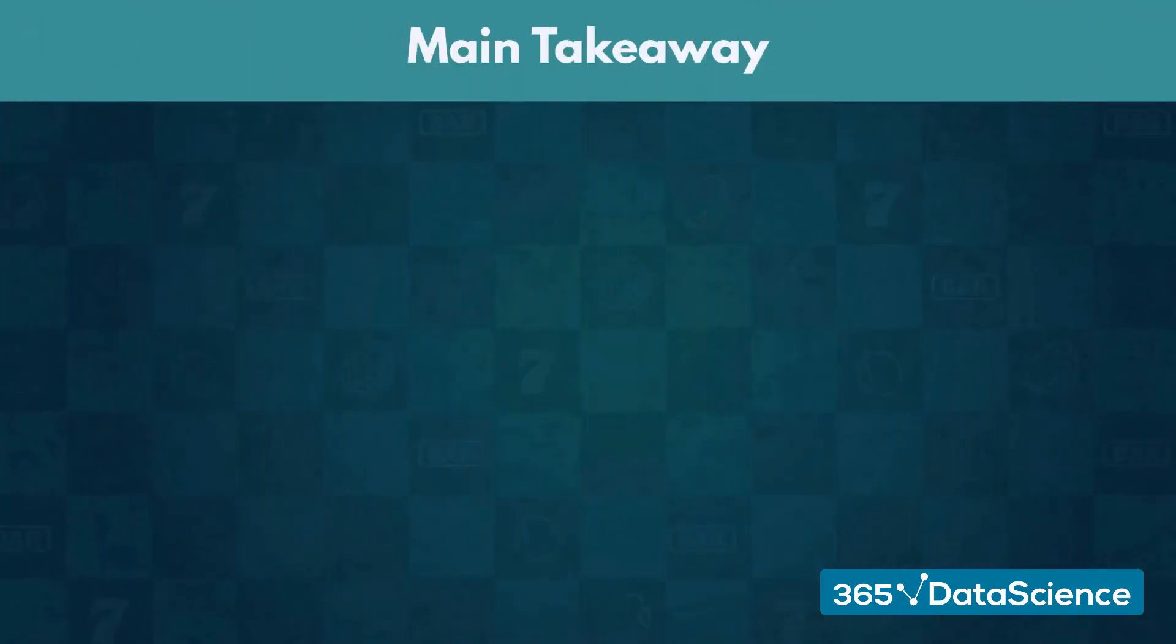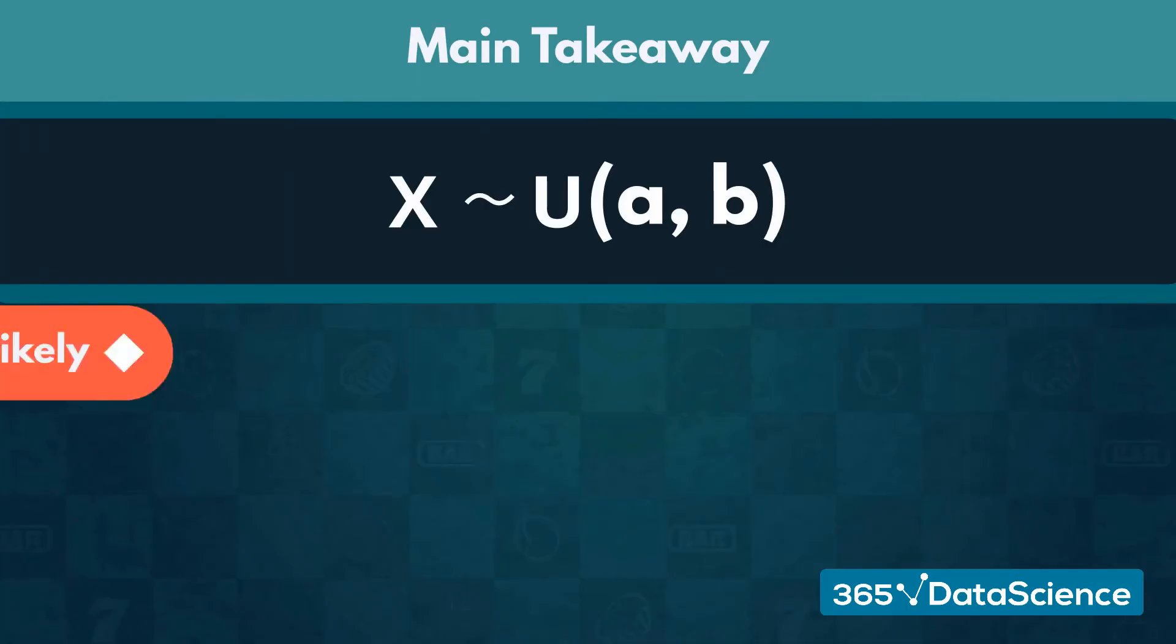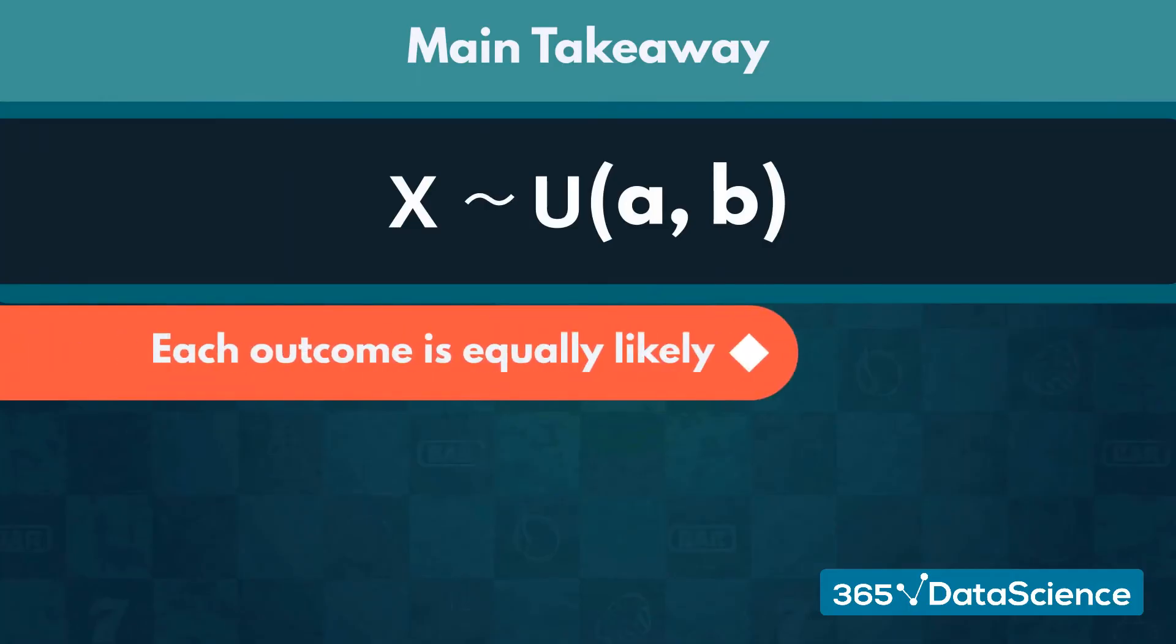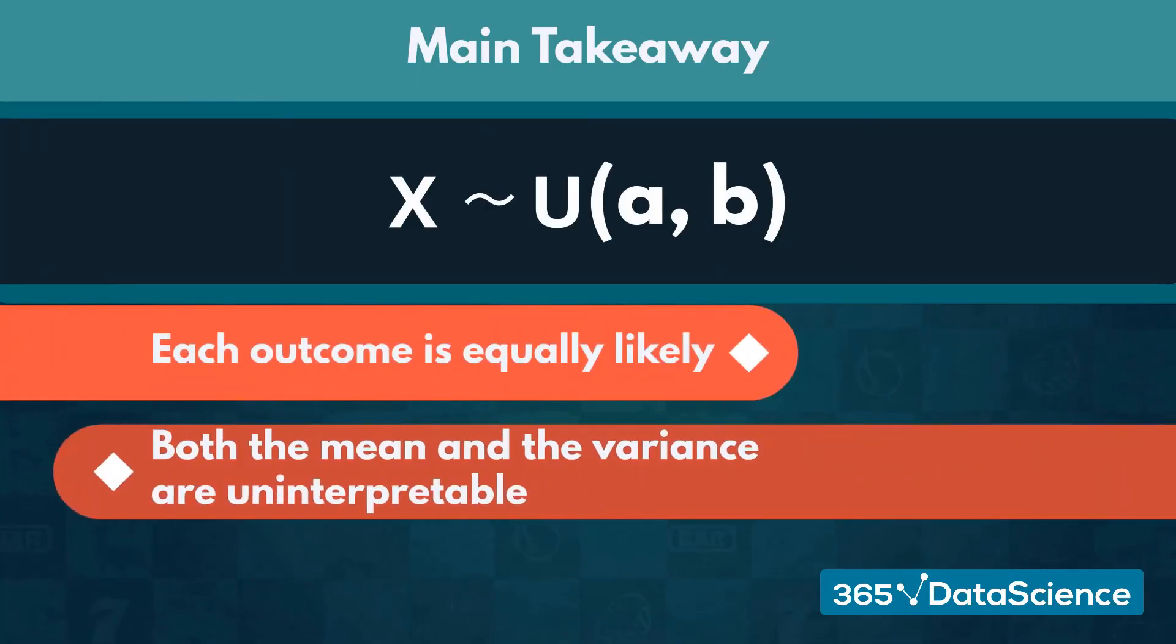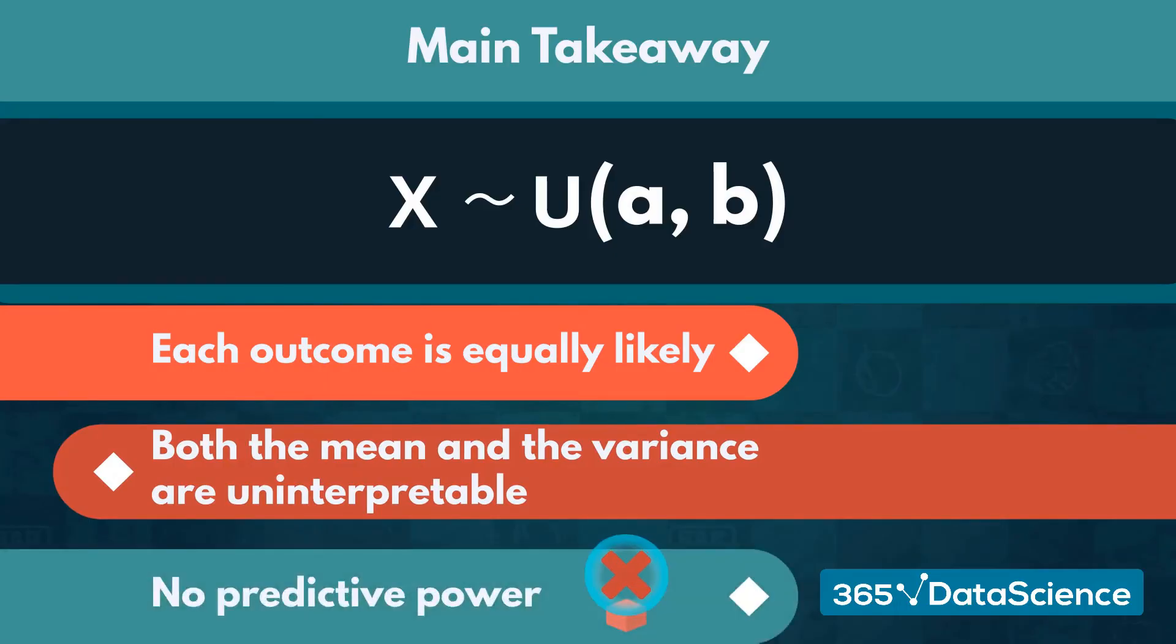The main takeaway is that when an event is following the uniform distribution, each outcome is equally likely. Therefore, both the mean and the variance are uninterpretable and possess no predictive power whatsoever.